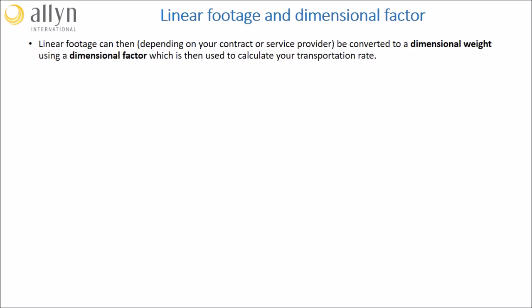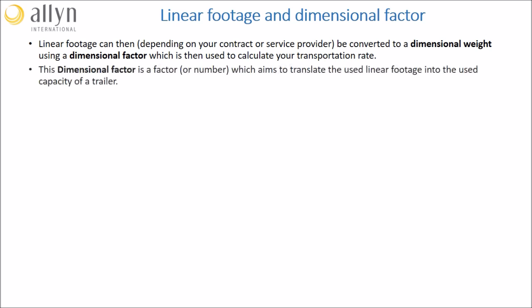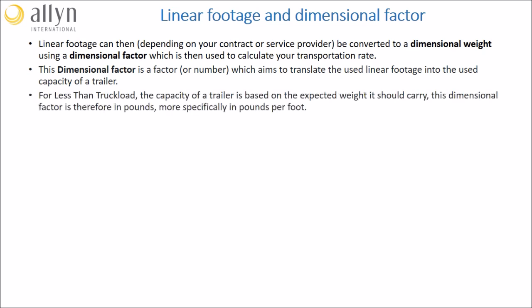Once you have calculated your linear footage, it can be used directly to establish your price, or it can be converted to a dimensional weight using a dimensional factor, and this weight is then used to calculate your transportation rate. As its name indicates, this dimensional factor aims to translate the used linear footage into the used capacity of a trailer. As the capacity of a trailer is generally expressed in weight capacity, this factor is in pounds — more specifically, it is in pounds per foot — meaning that this number reflects how much capacity of the truck is used up by a linear foot.